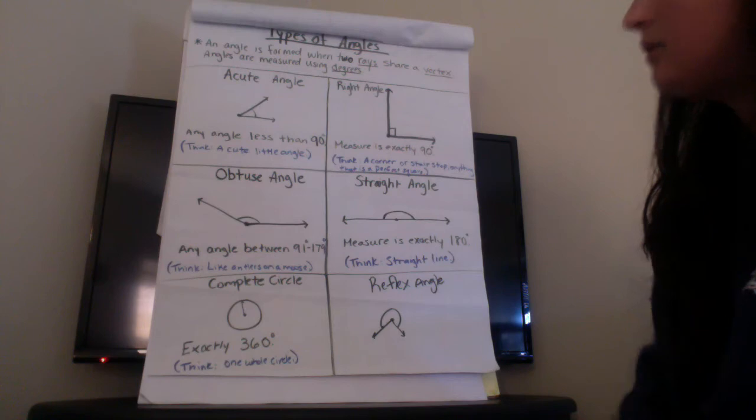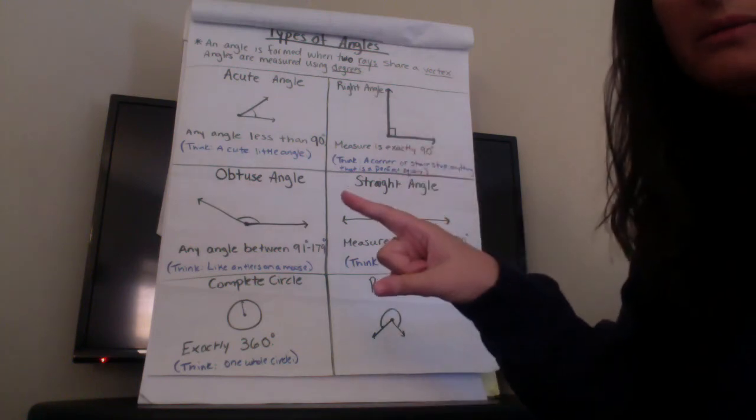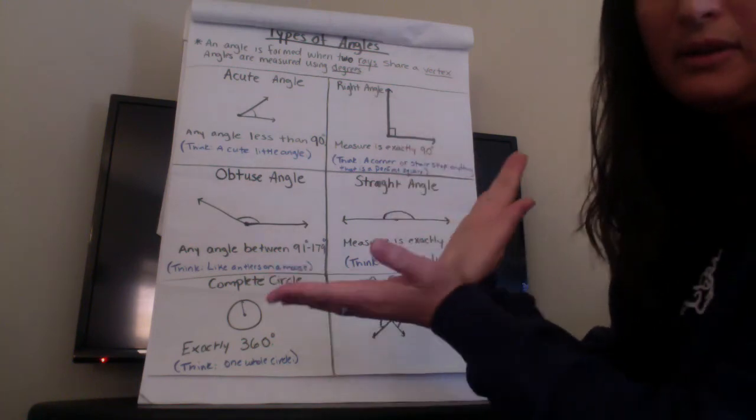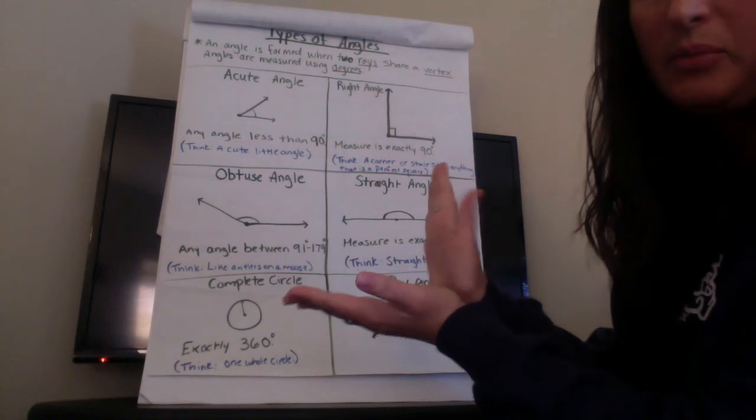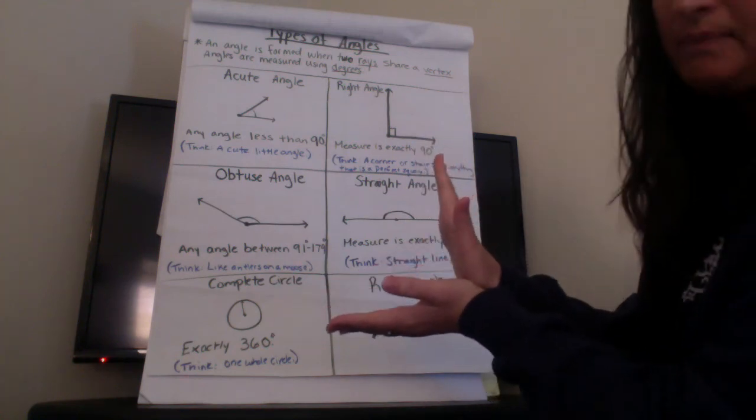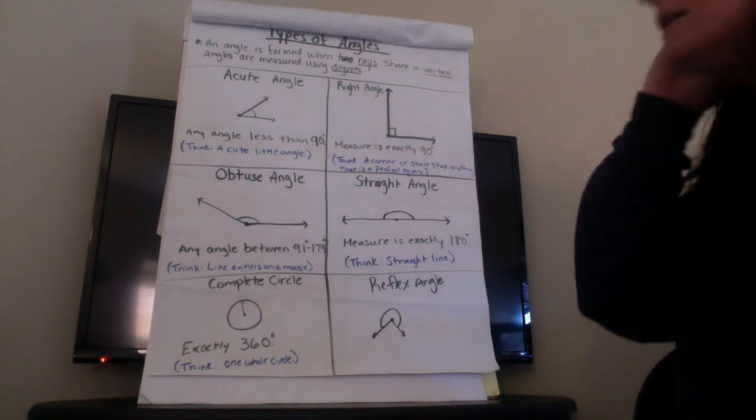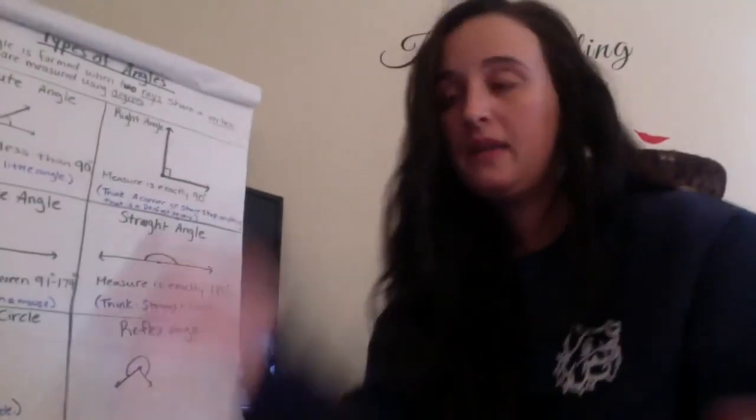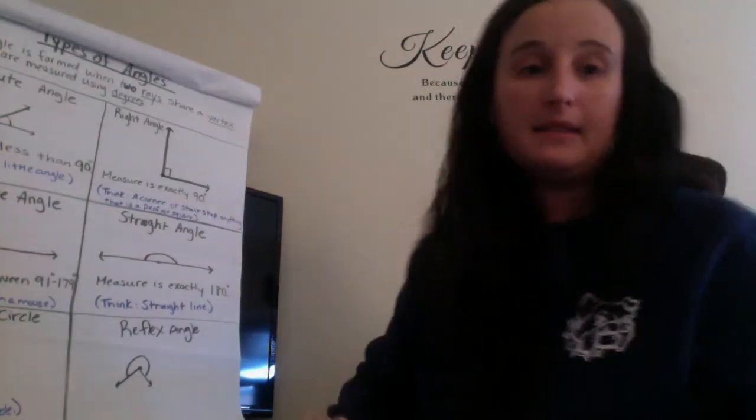So remember especially acute angle, small angle, obtuse angle are those bigger angles and then perfect right angle is 90 degrees. So from here now that we've reviewed the different types of angles, we've reviewed the different types of lines, your assignment today is going to be to do the exit slip.